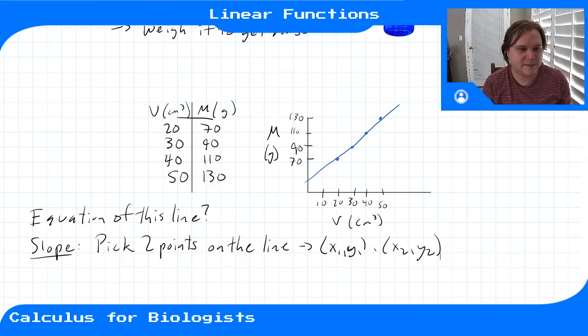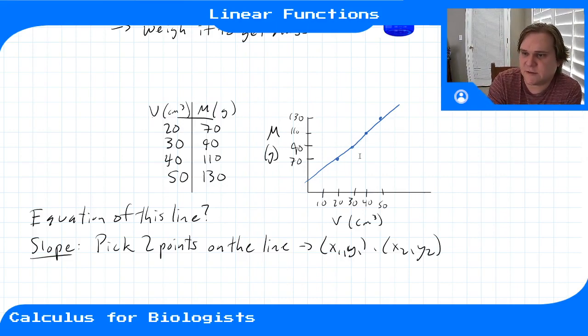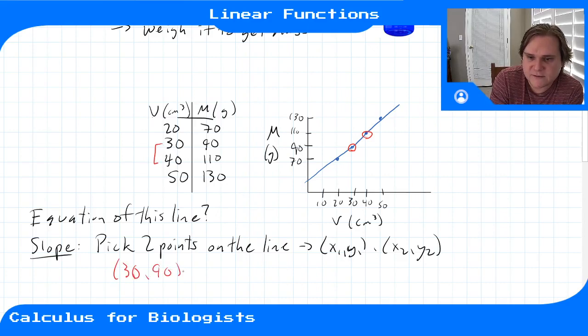So for this example, I'm gonna pick, let's see, I'm gonna pick maybe these two, right in the middle. So I'm gonna pick 30, 90, and 40, 110.